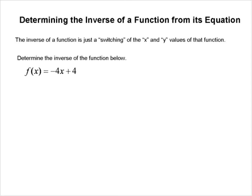To find the inverse of a function is fairly straightforward, especially with a simple function like this. We have f(x) = -4x + 4 and we want to determine the inverse of the function — what is the equation of the inverse? The first thing we do is replace f(x) with y, so y = -4x + 4.